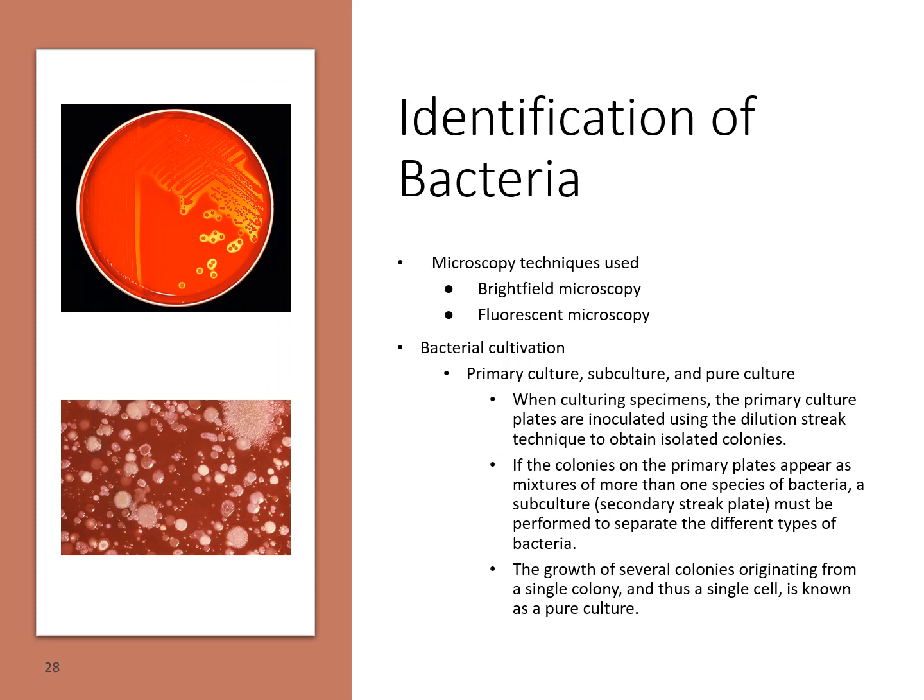In microbiology, you could work with a bright-field microscope or a fluorescent microscope, depending on the stain being used. With culture plates, you have primary culture, subculture, and pure culture. The primary culture is what you first inoculate using the dilution streak technique to get isolated individual colonies. Sometimes it's not a pure culture — there are multiple organisms — as shown in the image where you have a mixture of different organisms with different colors and sizes.